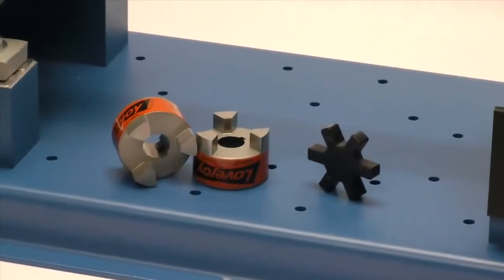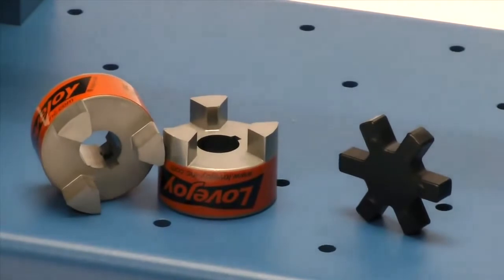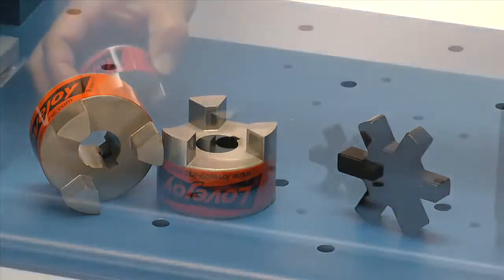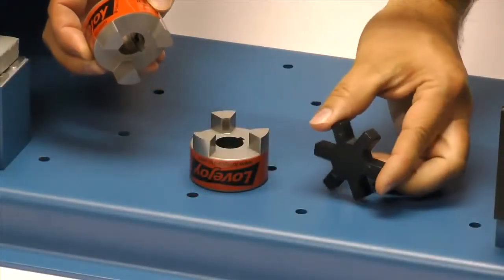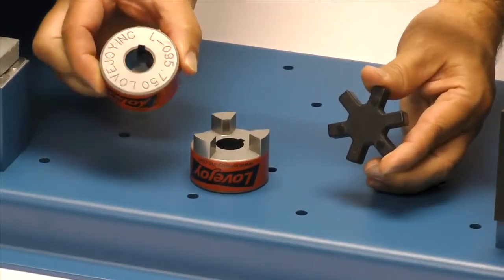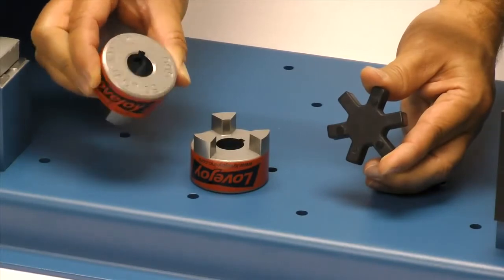The following components are provided with the purchase of your Lovejoy jaw-style coupling. You should have two jaw-style hubs and a spider. Always inspect the components to ensure you have received the proper parts and review the application details to ensure that this is the proper coupling to accommodate your application requirements.